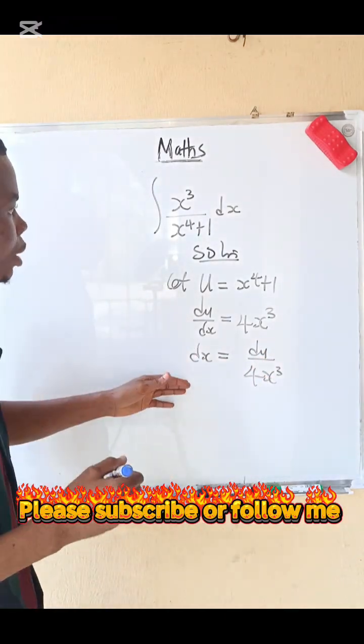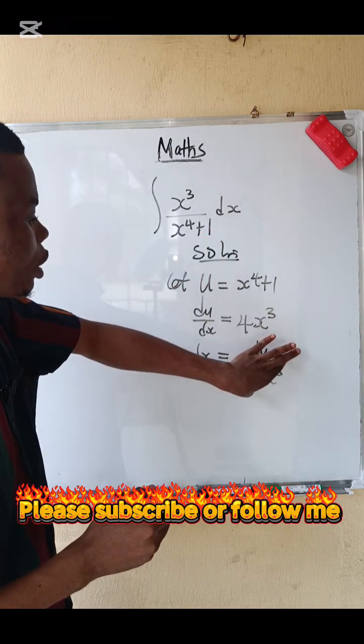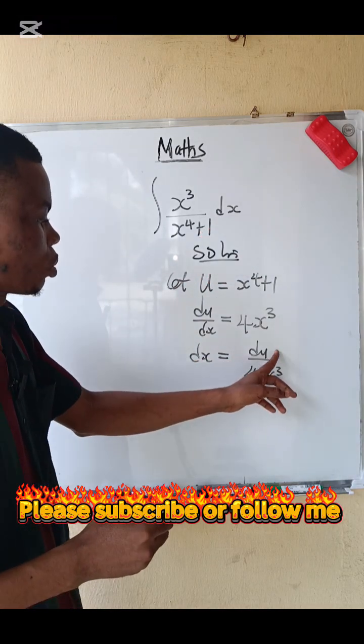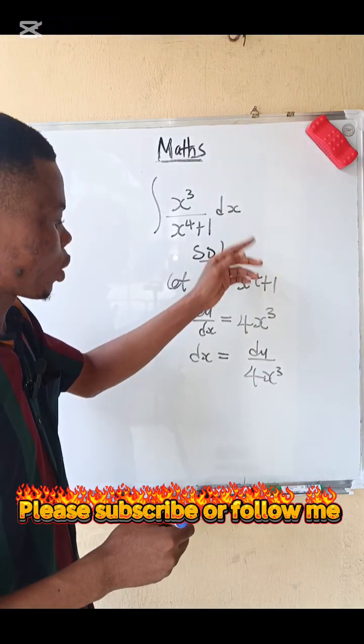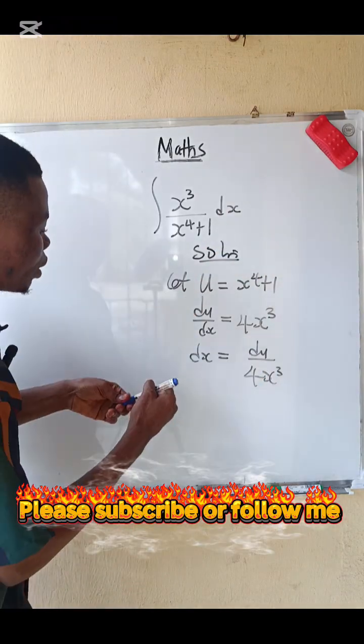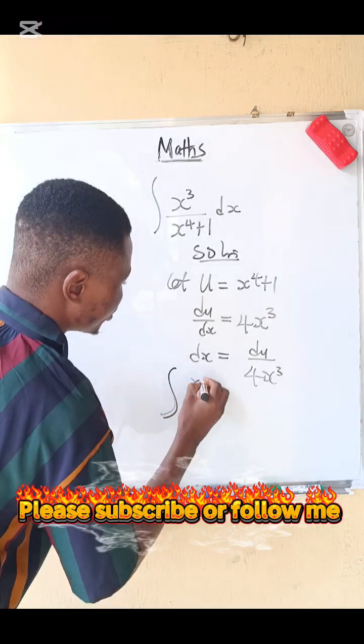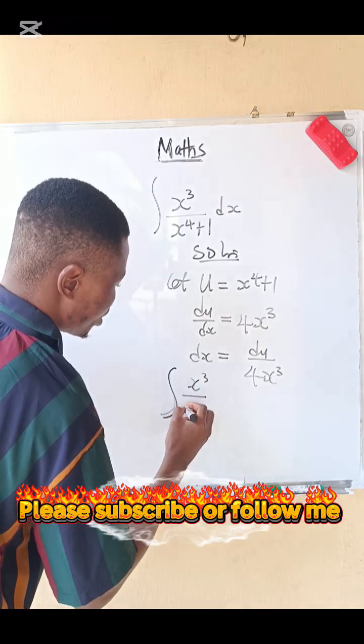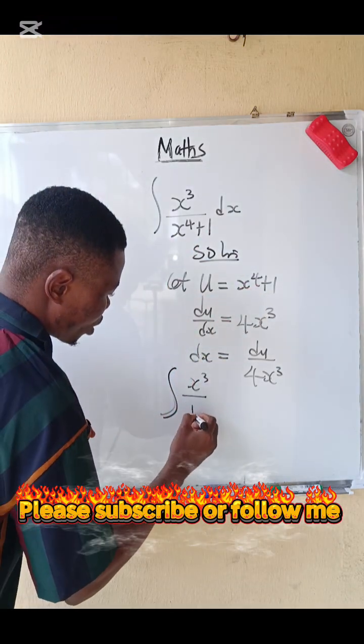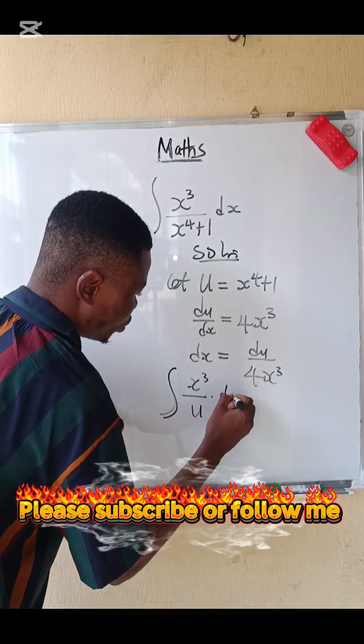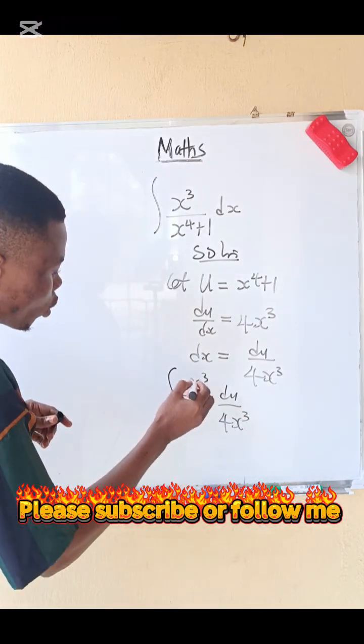So go back to the original question where you have dx, replace it with this because dx equals du over 4x cubed. So we now have integral of x cubed divided by u, remember that all of this is u, multiplied by du over 4x cubed. So this x cubed will go with this x cubed.